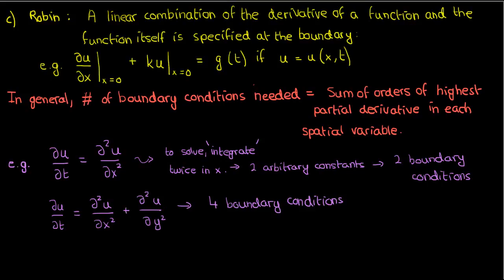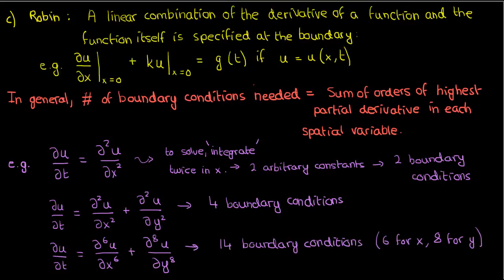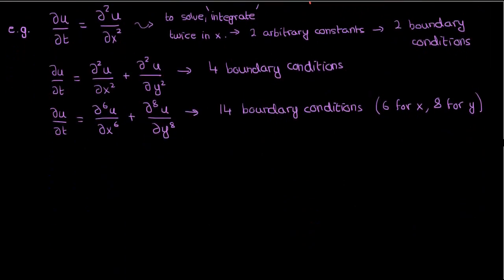On the other hand, if my PDE was the time derivative of u with respect to t equals d²u dx² plus d²u dy², then I would need four boundary conditions. Two for x to make up for the two derivatives in x, and then two for y to make up for the two derivatives in y. If my PDE was something even crazier, like du dt equals d⁶u by dx⁶ plus the eighth derivative of u with respect to y, then I would need 14 boundary conditions, six for x and eight for y.